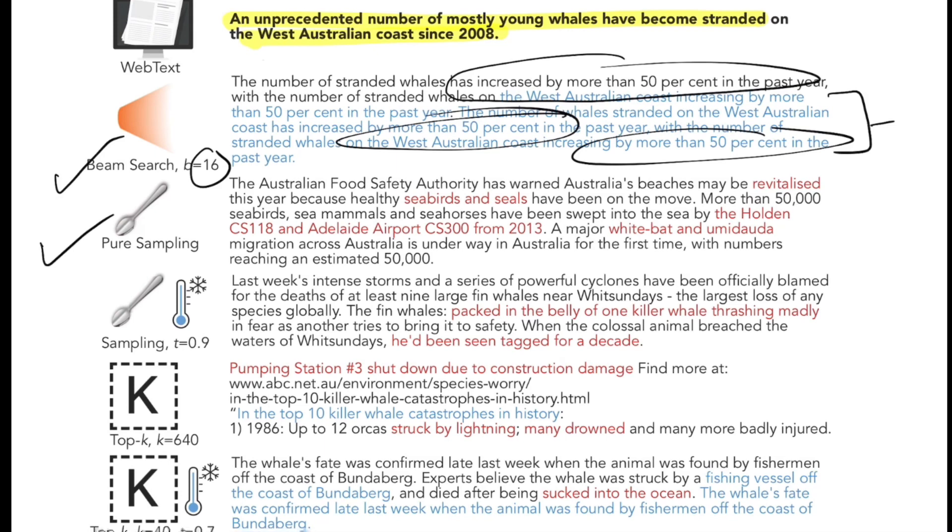Then you have pure sampling, where you sample a random word based on the probability distribution. The red one shows incoherency, this is not much related to the text we're talking about. Since it's based on sampling from the entire vocabulary at every time step, the model has a lot of choice, so chances are high you'll be sampling things that are not coherent.